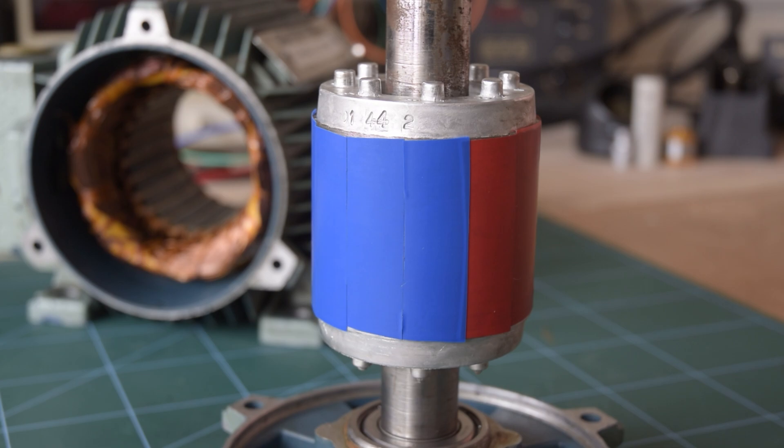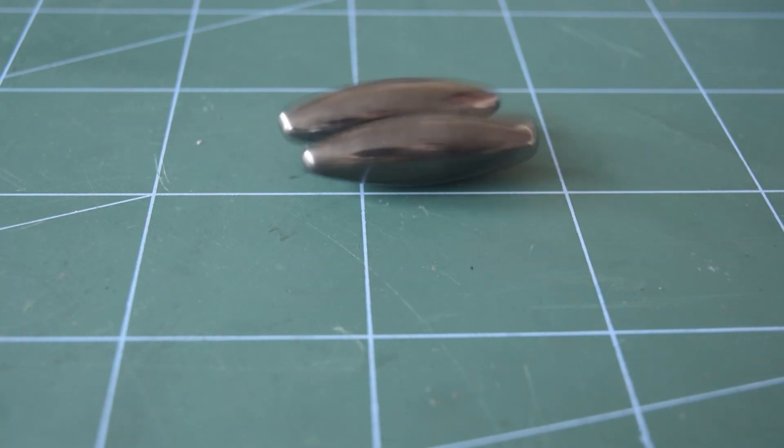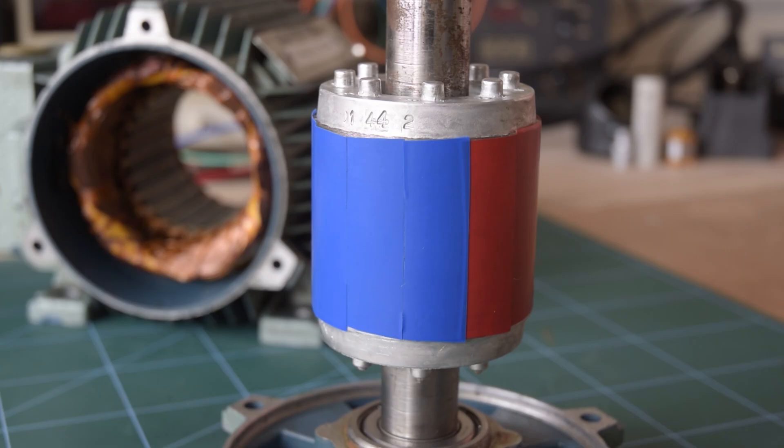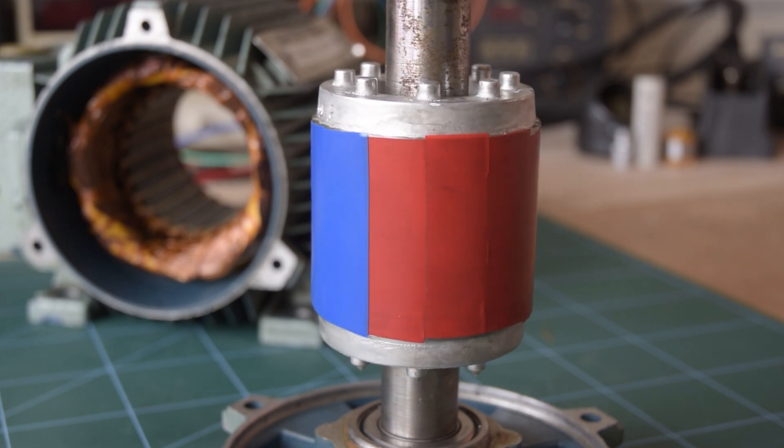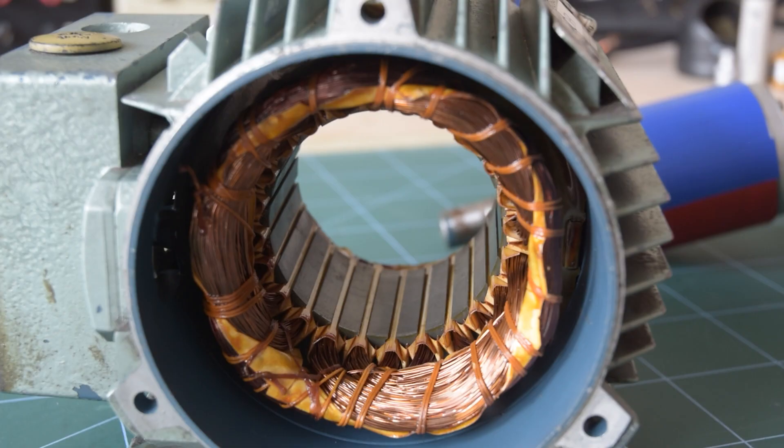As we all learnt at school, opposite magnetic poles attract, which means if there's any other magnetic fields nearby, our rotor's going to try and rotate to line up with the other magnetic field. Which brings us back to the stator.